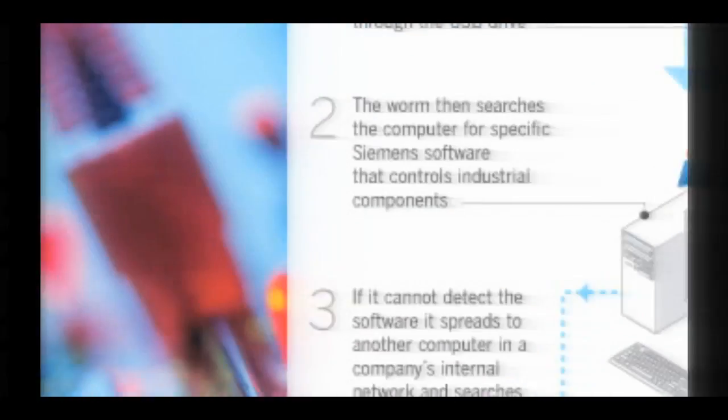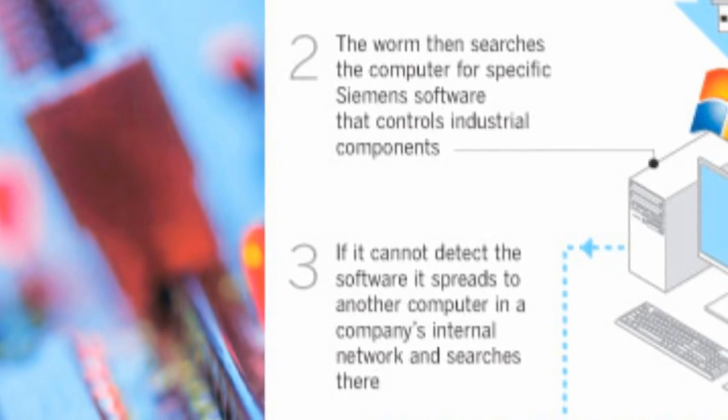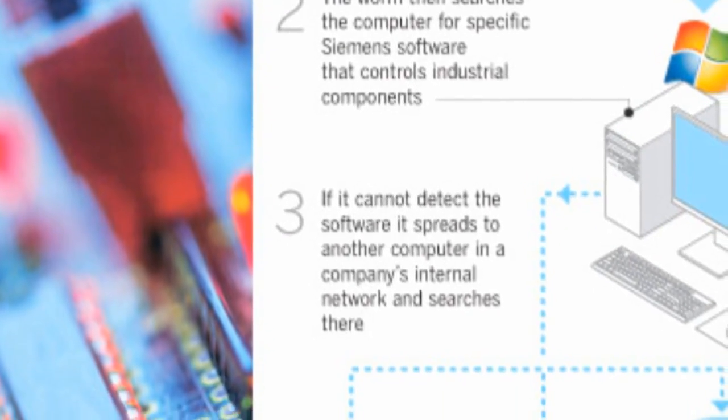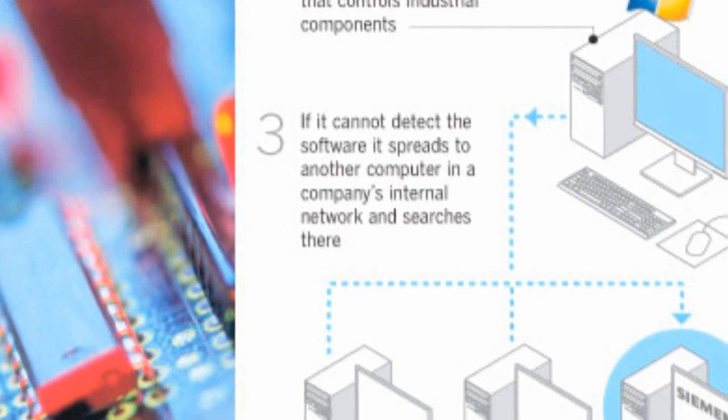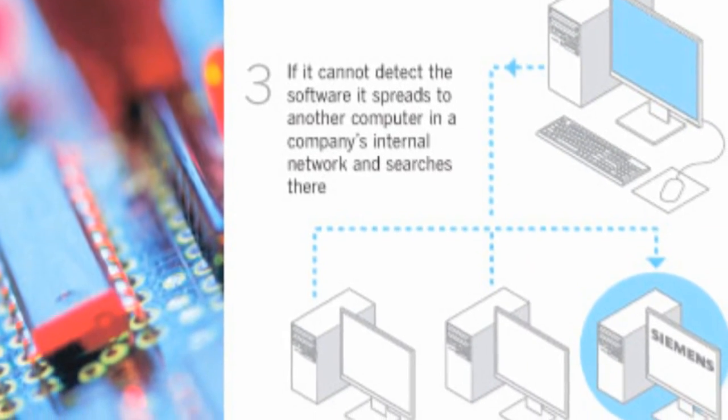Another factor that separates Stuxnet from other worms is that it doesn't just affect any old computer. It searches for a specific type of system. If the current system is not what it's looking for, it spreads to another computer in the network.